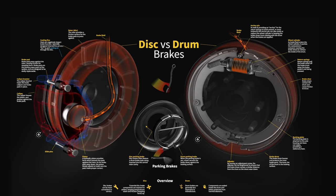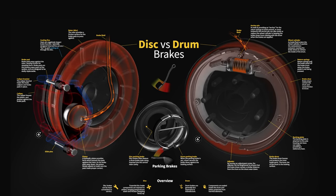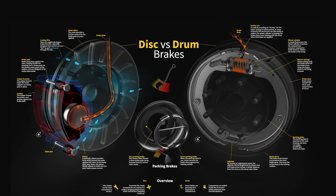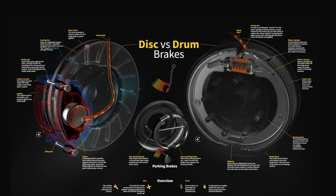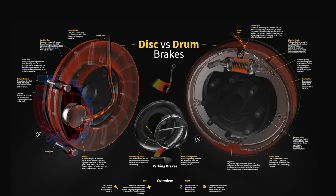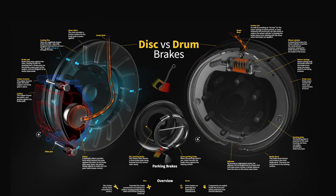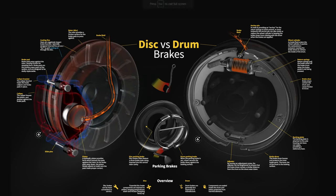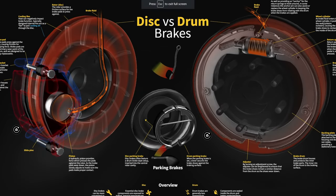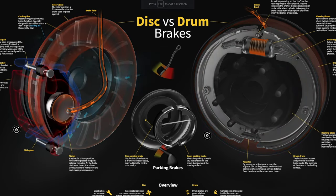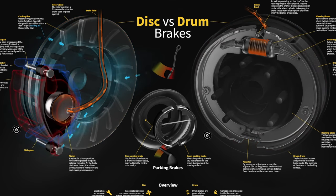Before diving into the difference between disc and drum brakes, it's important to know how a typical automotive brake system works. When the driver presses the brake pedal, a device called the master cylinder sends pressurized brake fluid through a collection of lines to a caliper or wheel cylinder at each wheel. The caliper or wheel cylinder then activates the friction brake to slow the wheel and bring the vehicle to a stop.